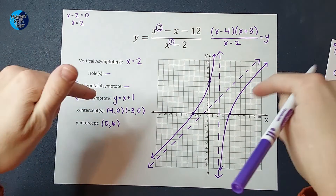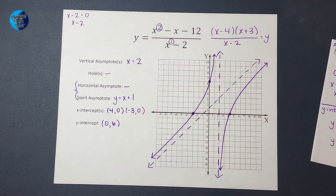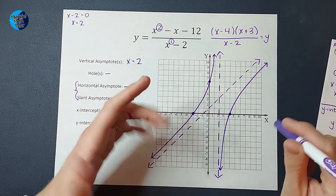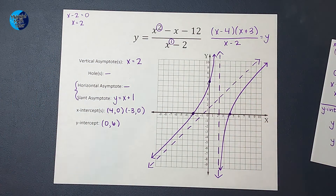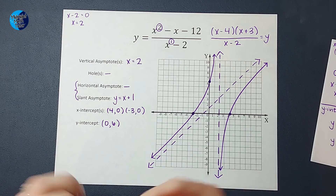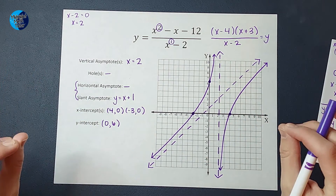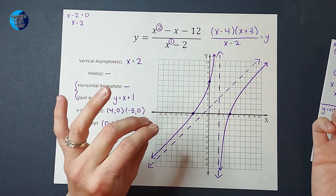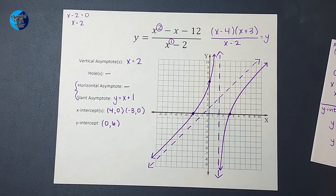I hope this made sense. If you have any questions, leave them in the comments below. The last optional step — which can be very helpful — is to plug this into a graphing calculator and make sure you were on the right track. If anything is off, go back and look at your work. We always want to do it by hand first and then check it on the graphing calculator. I hope this made sense, thanks!